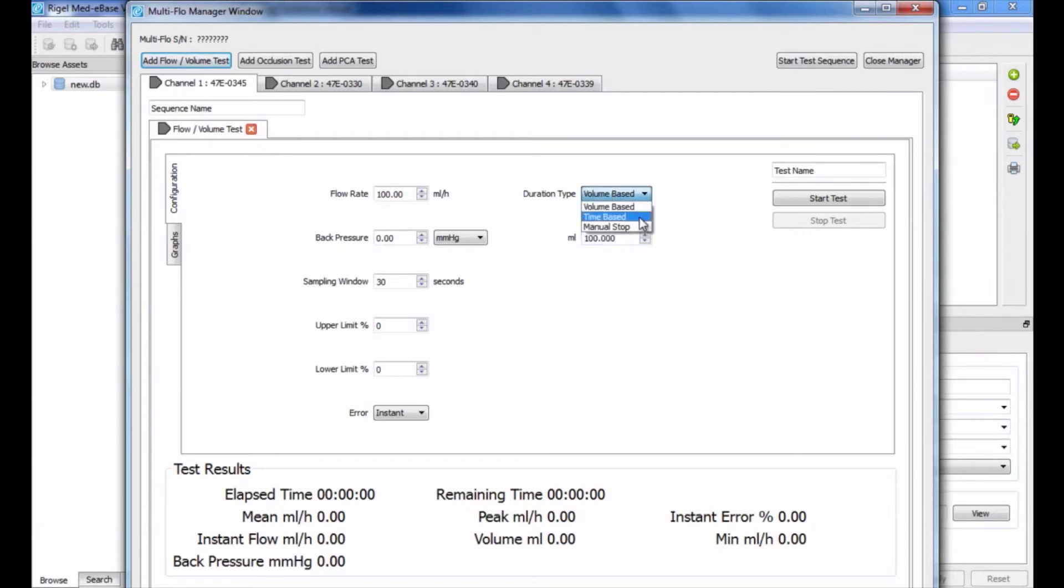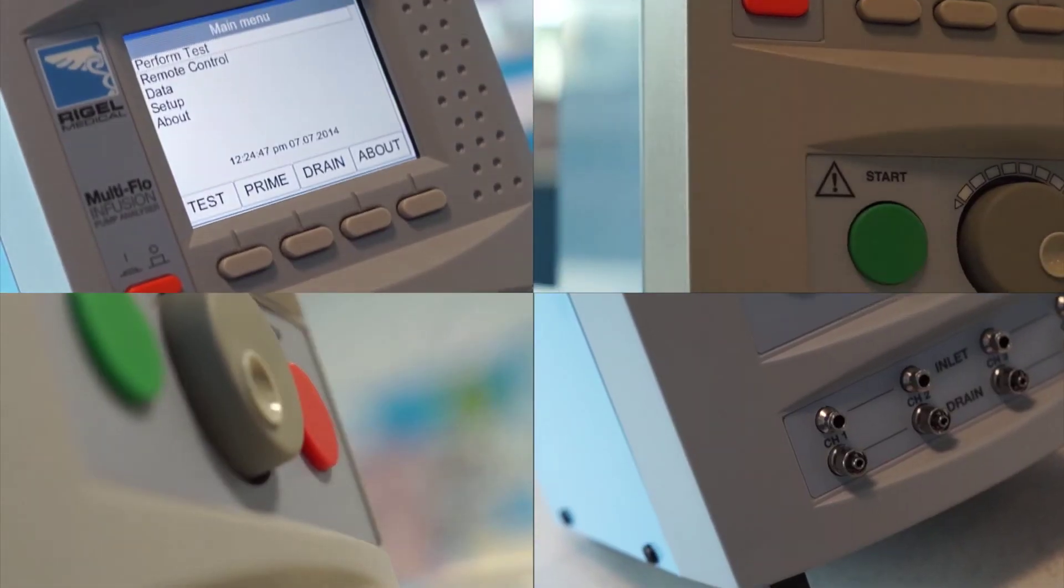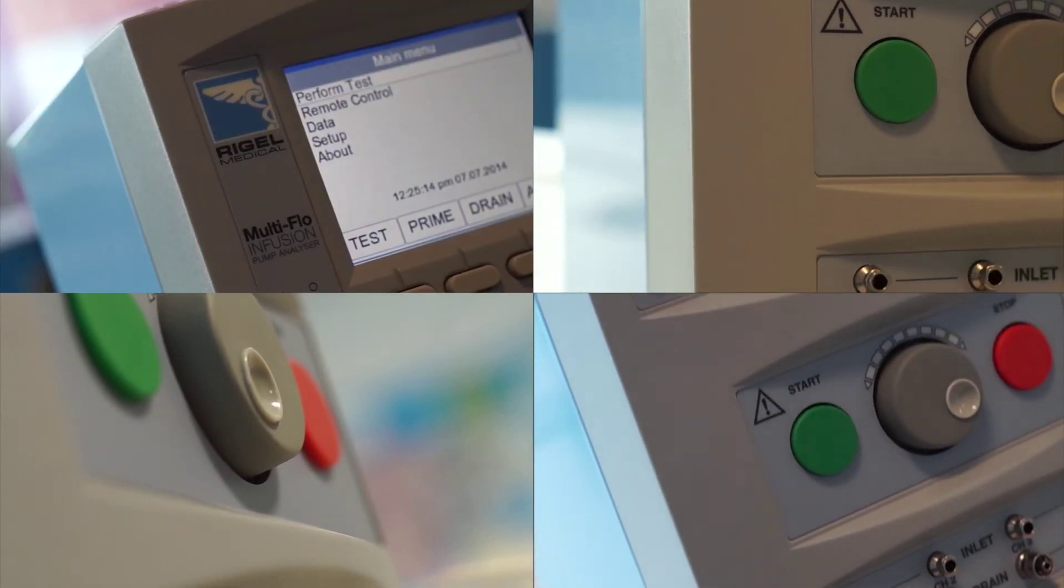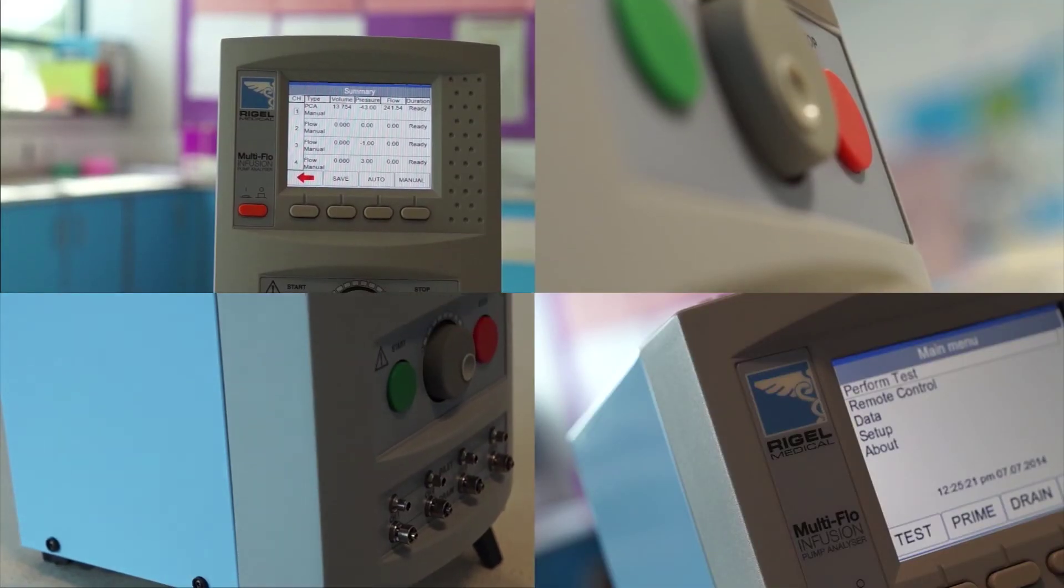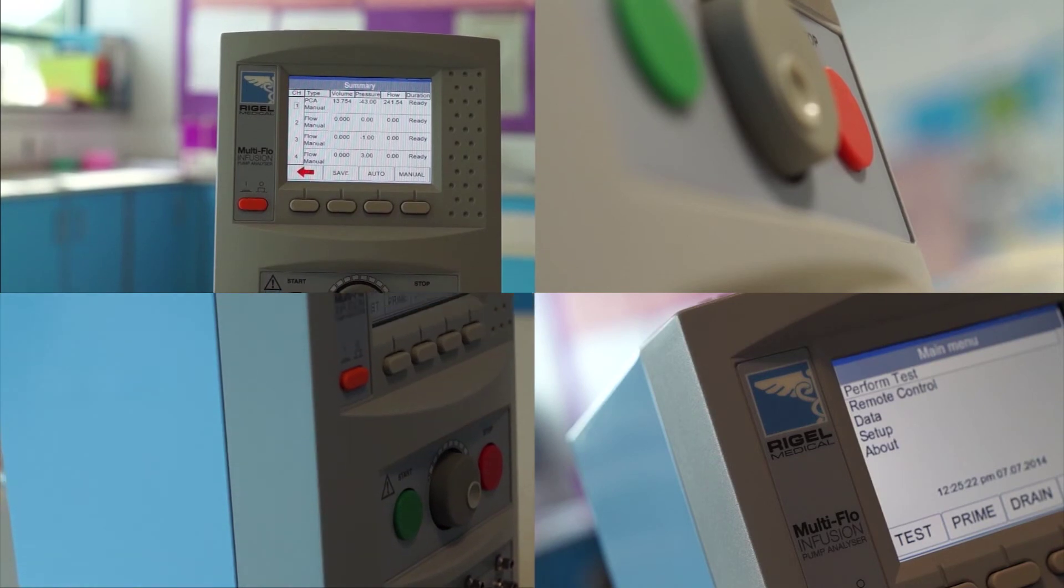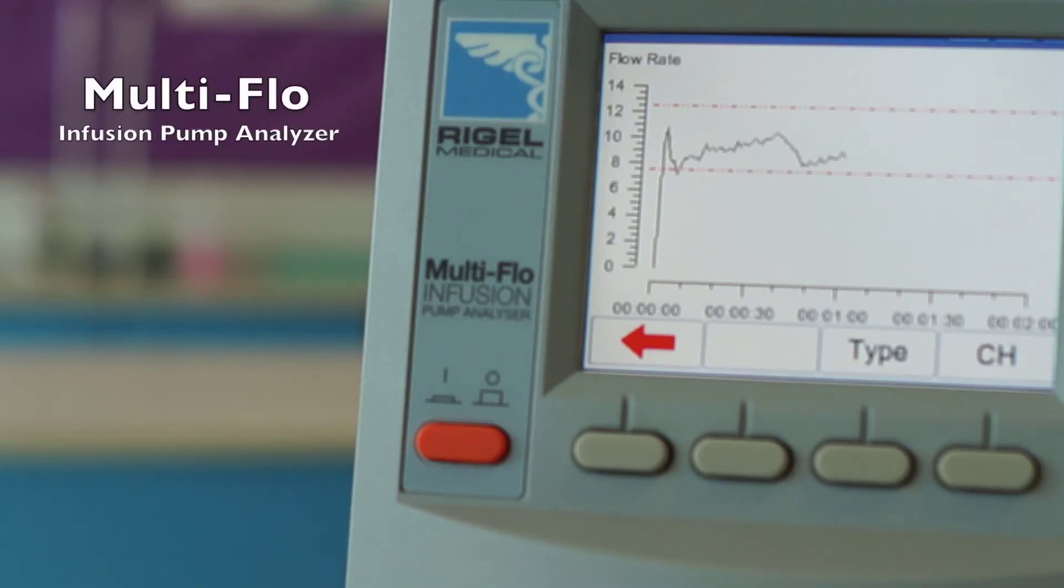The Rigel Multiflow, used standalone or in combination with Medibase software, is a powerful solution for those who demand faster and more accurate testing. Why compromise on accuracy or speed when you can have both?